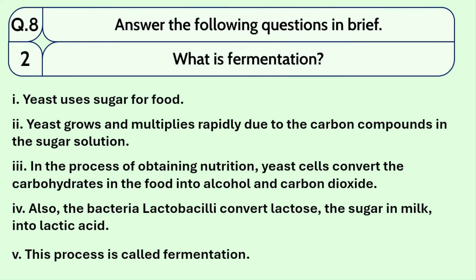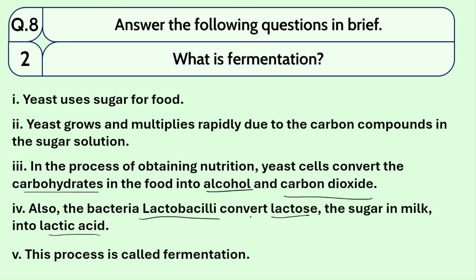Question number 2: what is fermentation? Yeast uses sugar as food — yeast grows and multiplies rapidly due to carbon compounds in sugar solution. In the process of obtaining nutrition, yeast cells convert carbohydrates in the food into alcohol and carbon dioxide. Also, the bacteria Lactobacilli convert lactose — the milk sugar — into lactic acid. This process is called fermentation. Fermentation means converting sugar, which is a carbohydrate, into alcohol and carbon dioxide, or into lactic acid.